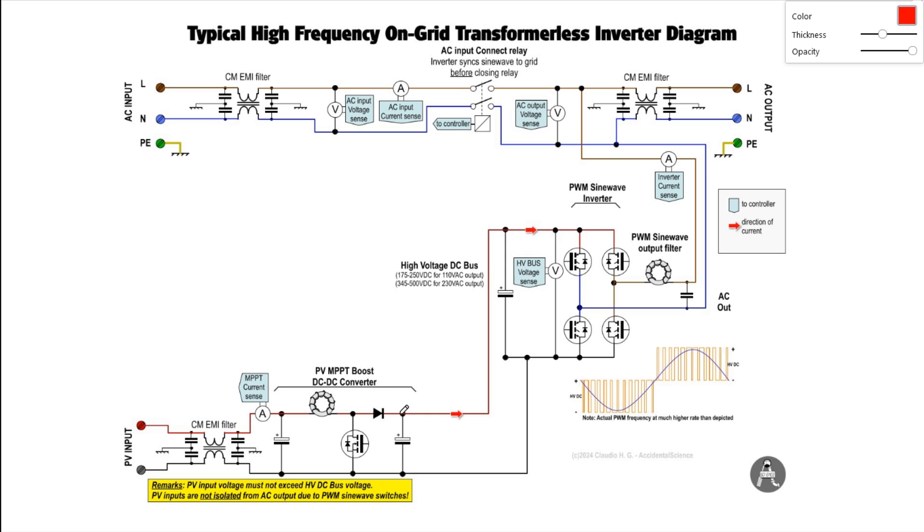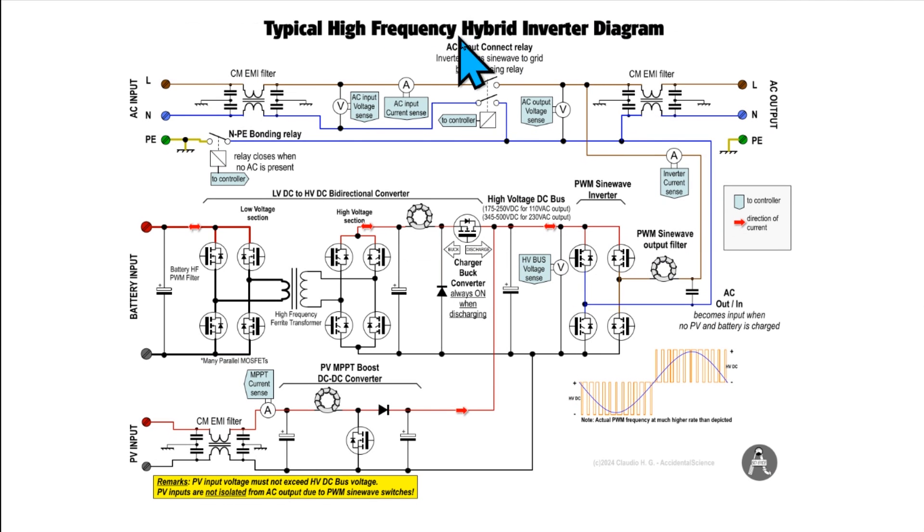So the maximum power point tracker essentially tries to raise the voltage when the voltage is too low, making a compromise checking for the current. When it reaches the maximum voltage and the maximum current, then that is the maximum power point that is achievable for that specific instant.